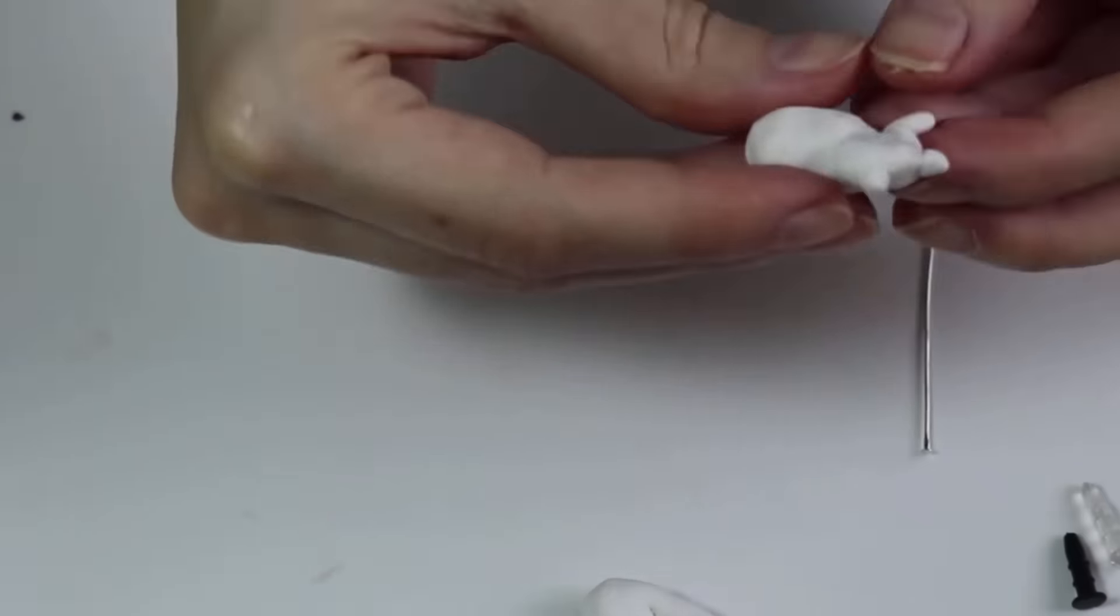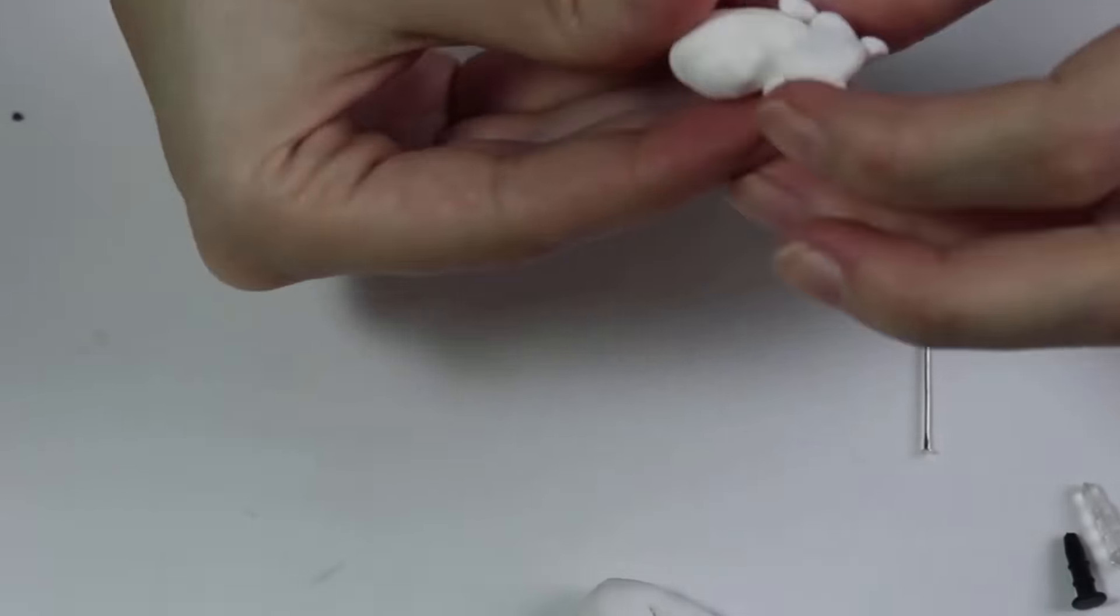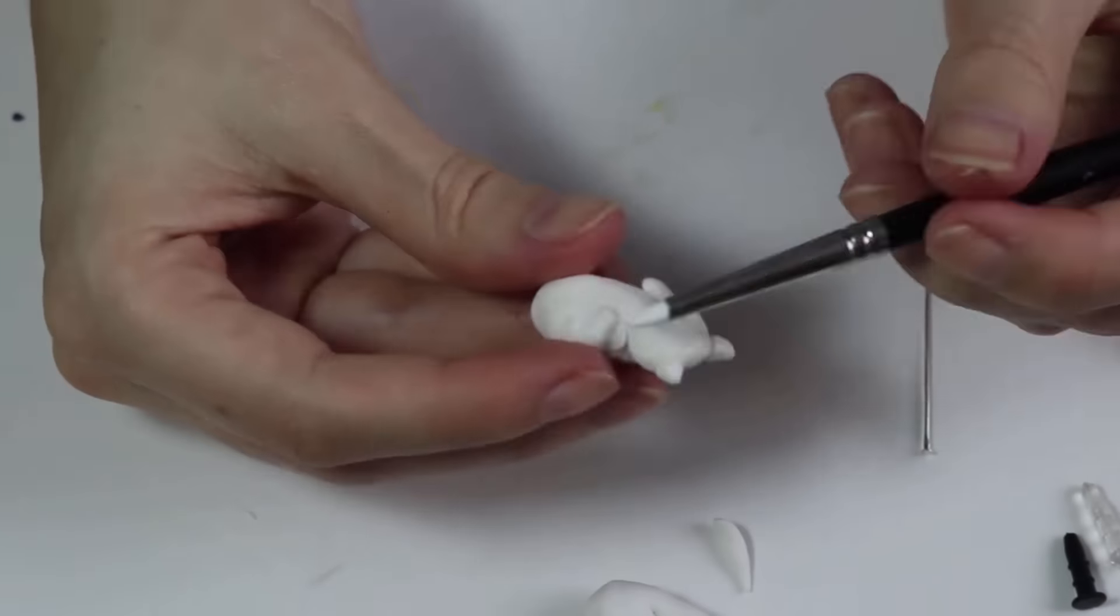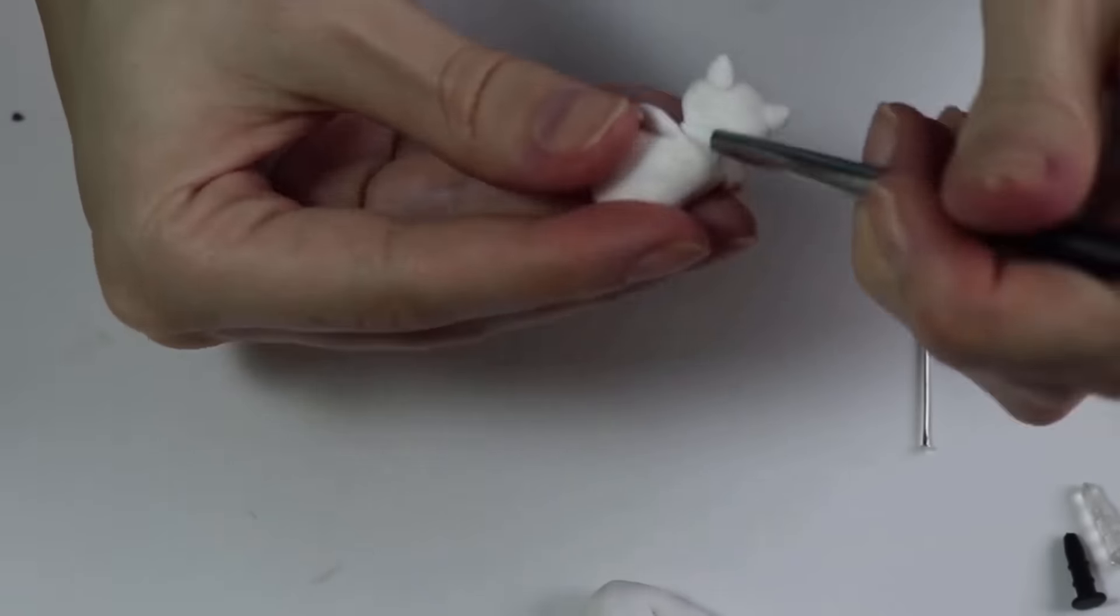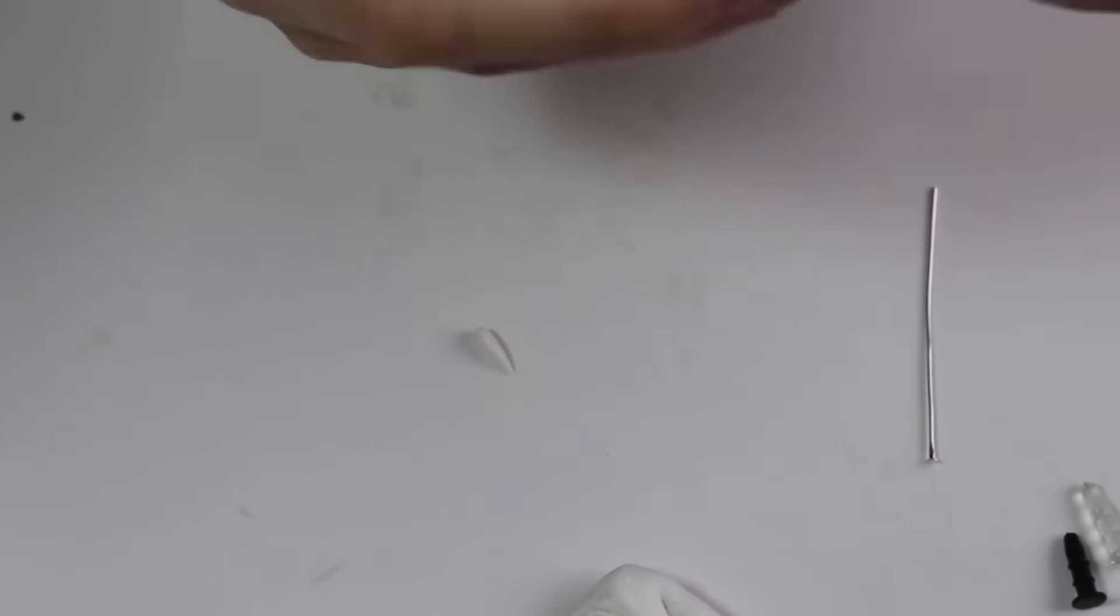Putting on his arms. Figuring out where I want them to sit, on his belly and on his side. And now I'm adding on his legs, and then his tail right in between the two legs.